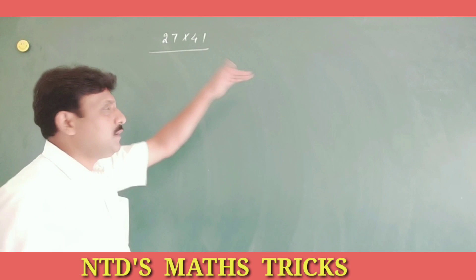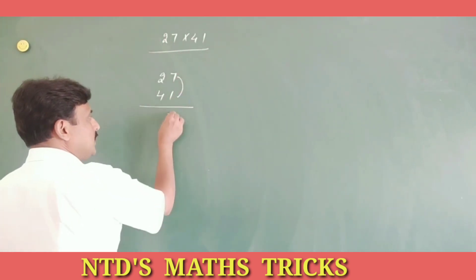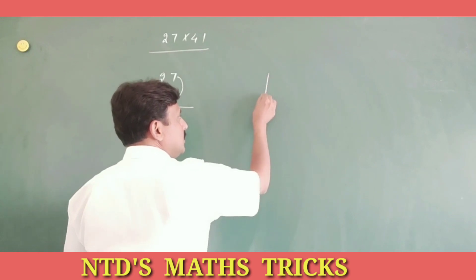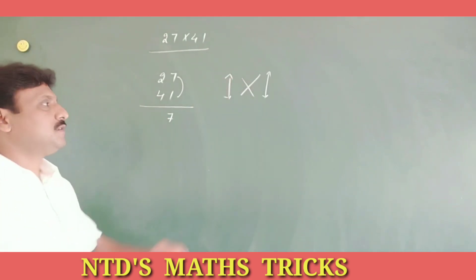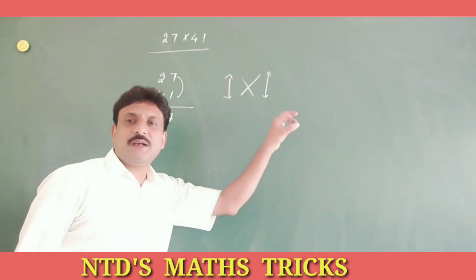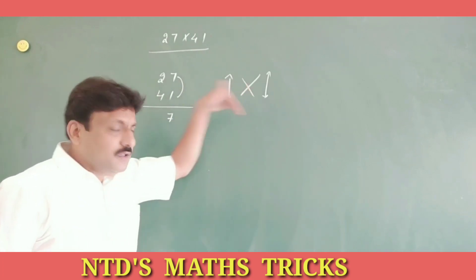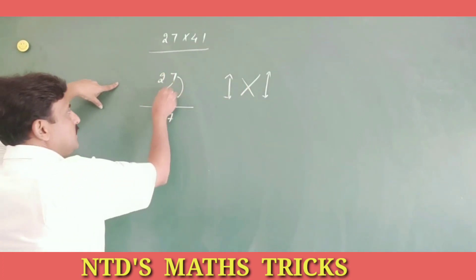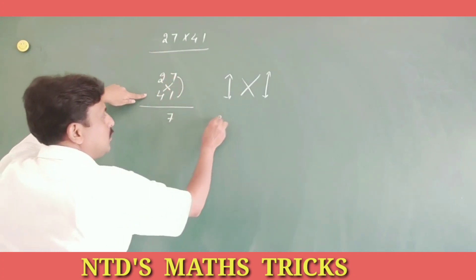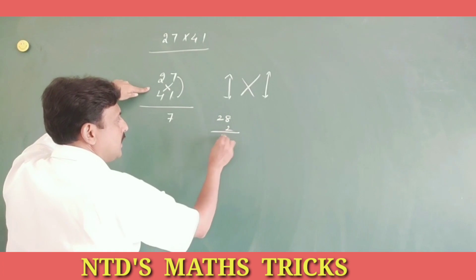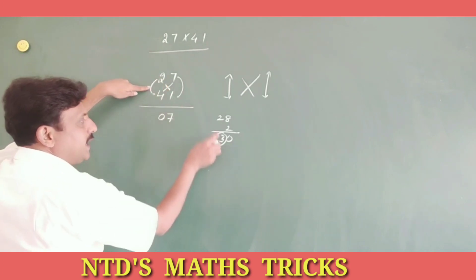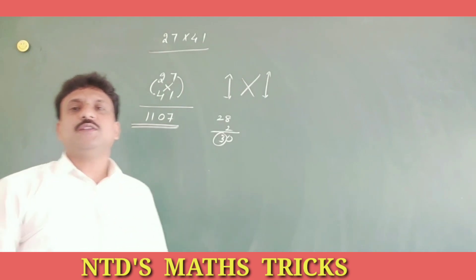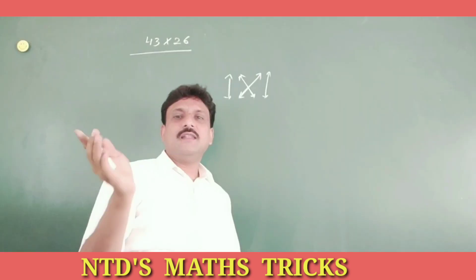Next one, 27 into 41. The trick is unit place multiplication, cross multiplication, and 10 place numbers multiplication. This is the magical trick. Apply this trick. 7 ones are 7, cross multiply these two. 7 fours are 28, 2 ones are 2, add, that is 13, write 0, 3 carry. 2 fours are 8, 8 plus 3, 11. 1107, this is the trick.